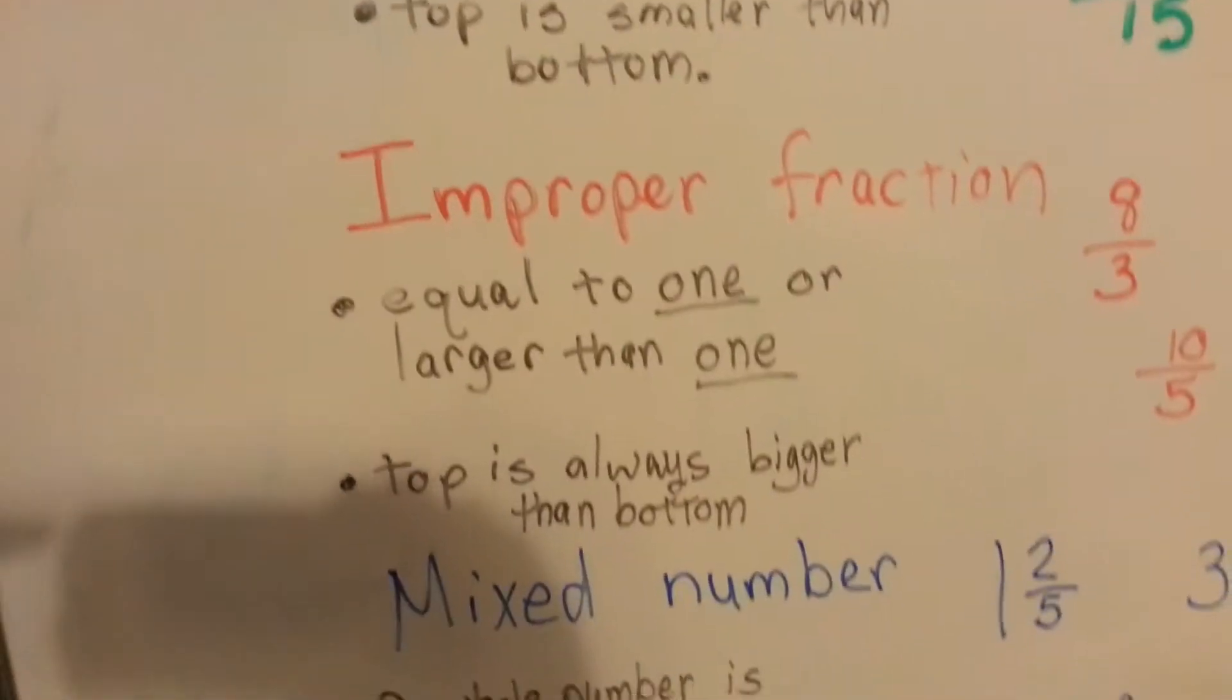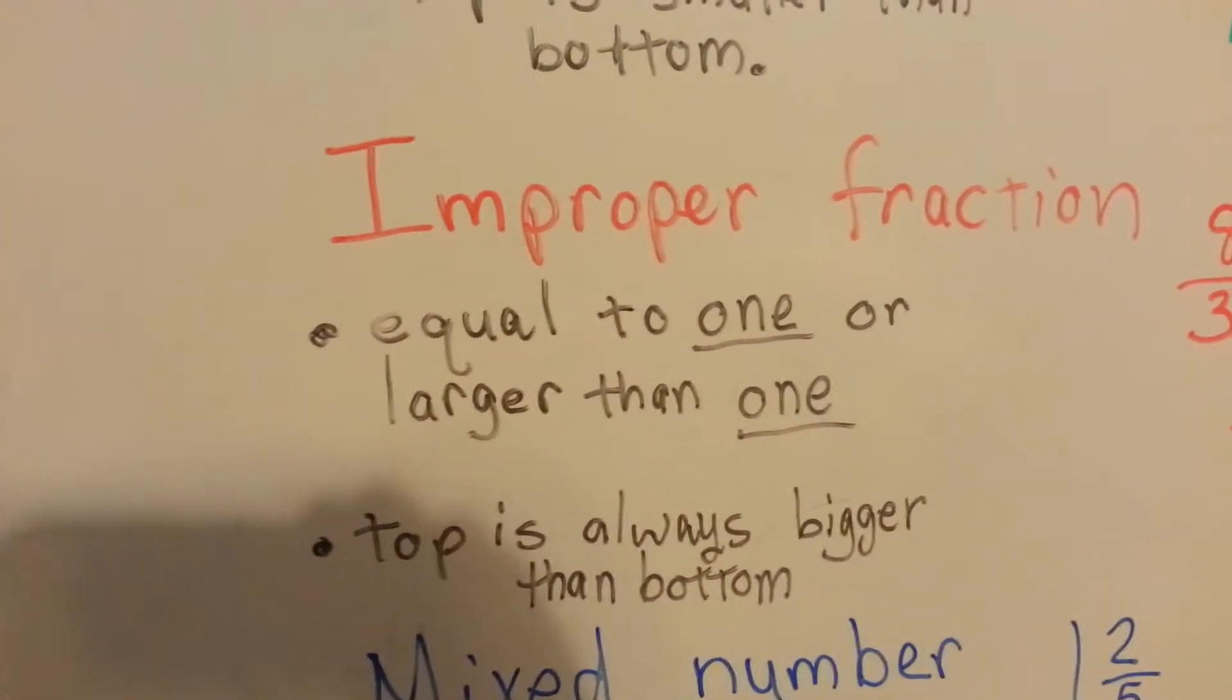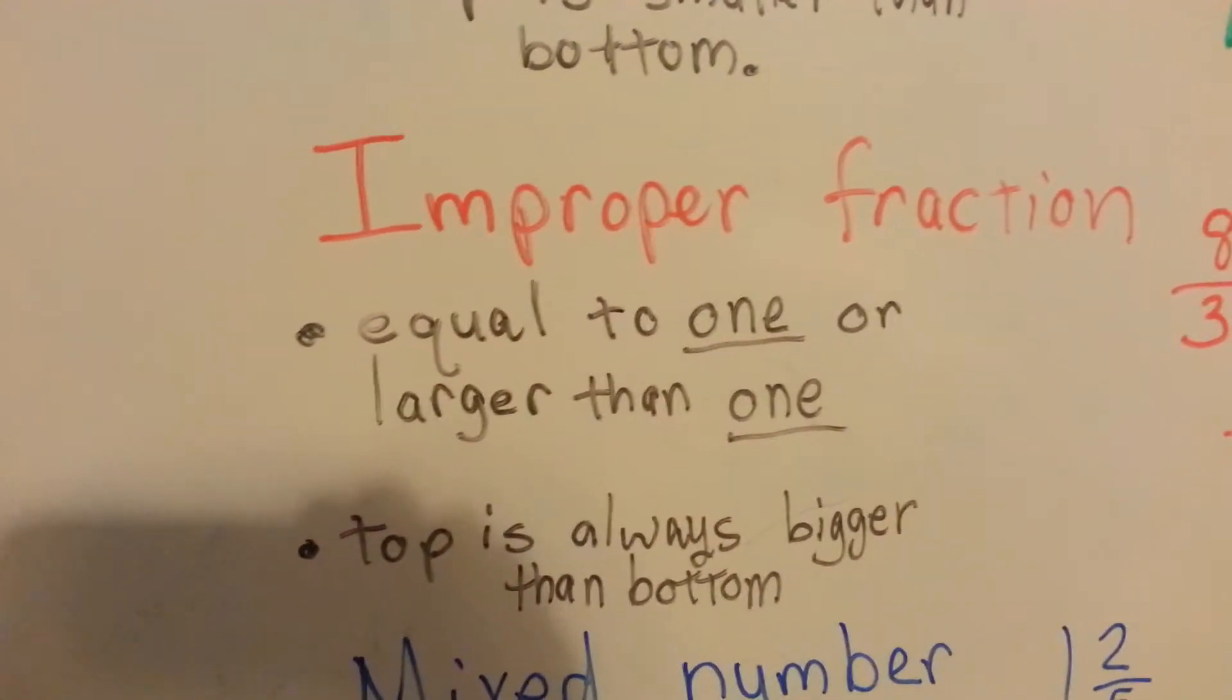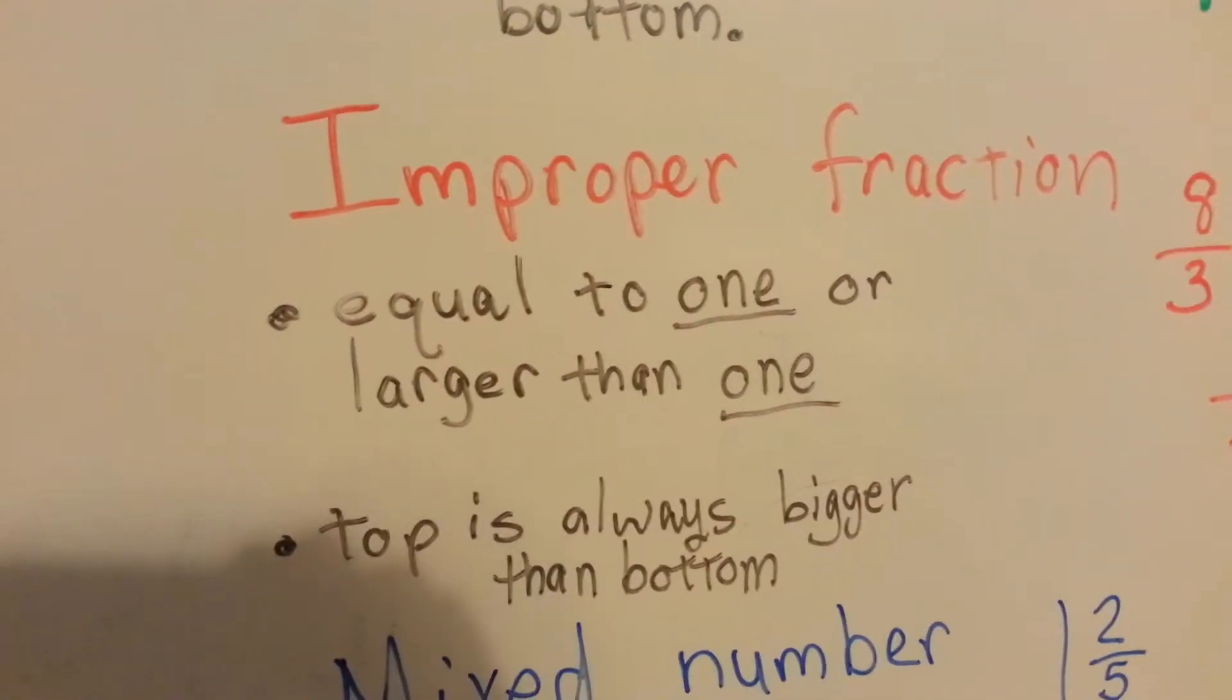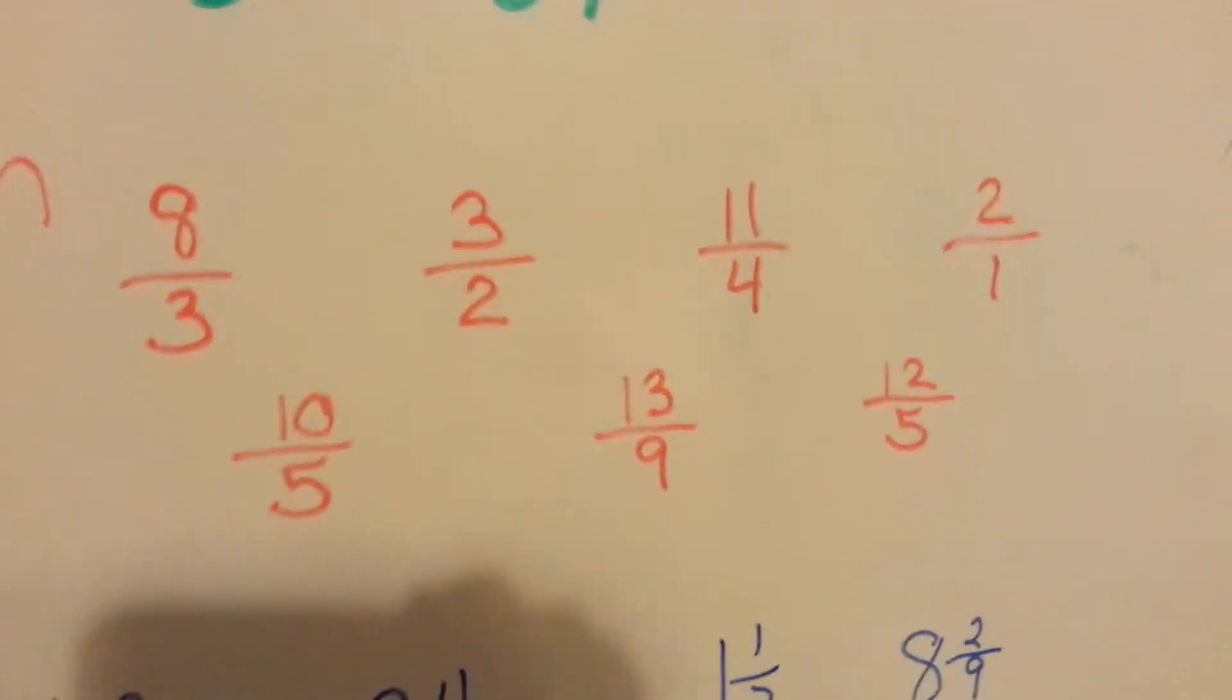An improper fraction, these are equal to one whole or larger than one, and the top is always bigger than the bottom. The numerator is always bigger than the denominator.